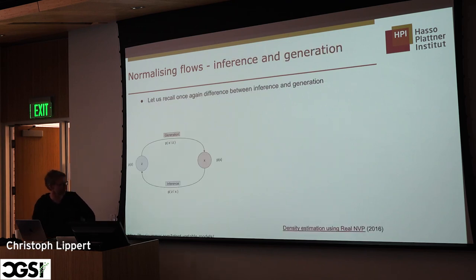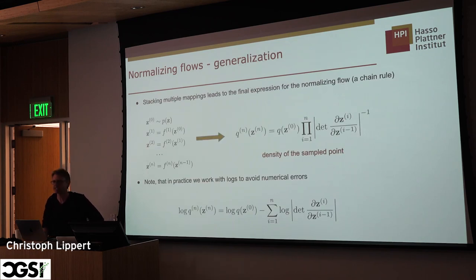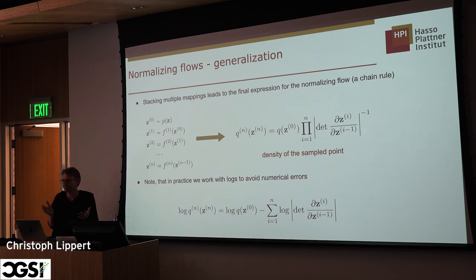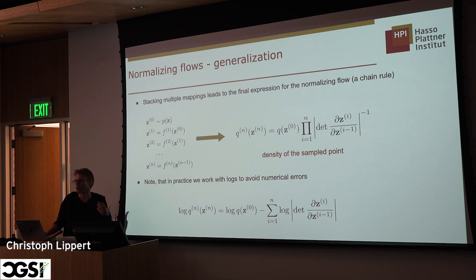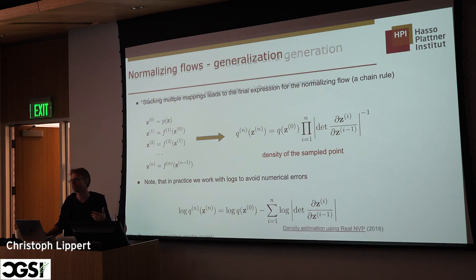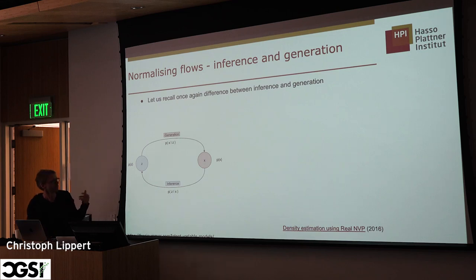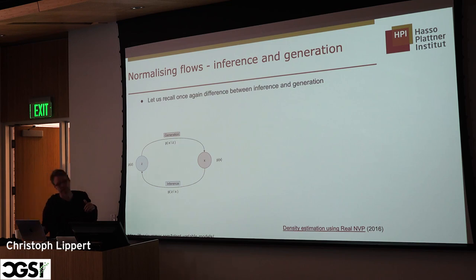That's the introduction — now you know everything about normalizing flows. The unknowns are how to get these invertible functions. That's the trickery of normalizing flows: coming up with recipes that give you invertible functions where you can efficiently compute the determinant of the Jacobian analytically.